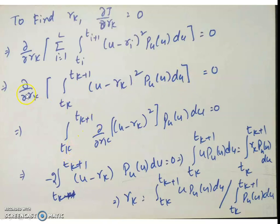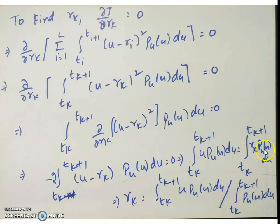Taking the derivative inside the integral: ∫[Tk to Tk+1] ∂/∂Rk (u − Rk)² pu(u) du = 0, which gives −2 ∫[Tk to Tk+1] (u − Rk) pu(u) du = 0. Separating u and Rk terms: ∫[Tk to Tk+1] u·pu(u) du = ∫[Tk to Tk+1] Rk·pu(u) du. Therefore, Rk = [∫Tk to Tk+1 u·pu(u) du] / [∫Tk to Tk+1 pu(u) du]. This is how we find the value of Rk.